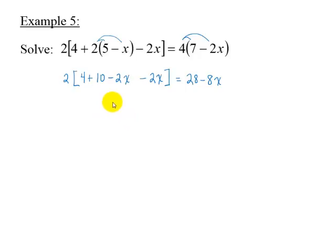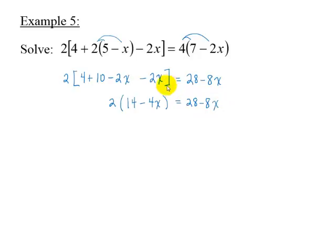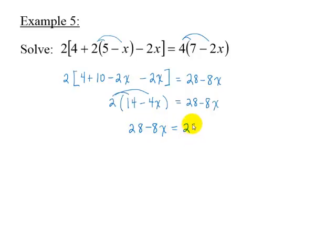Simplifying on the left, we get 2 times 14 minus 4x is equal to 28 minus 8x. Distributing, we get 28 minus 8x equals 28 minus 8x.